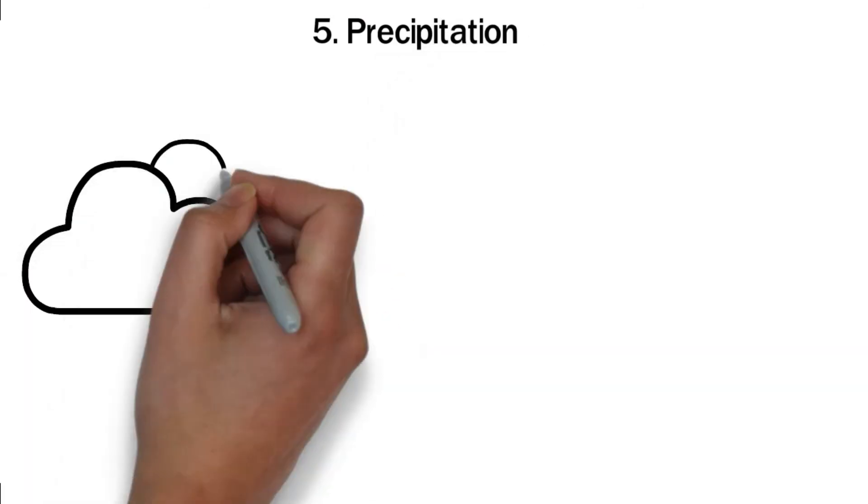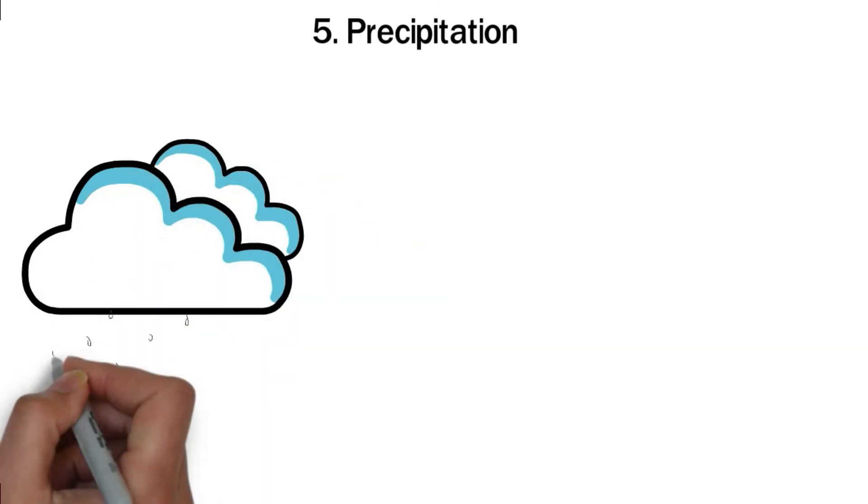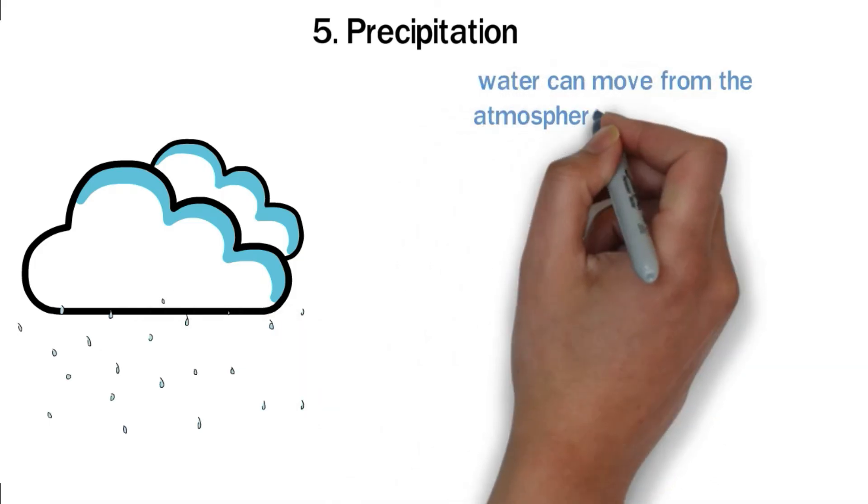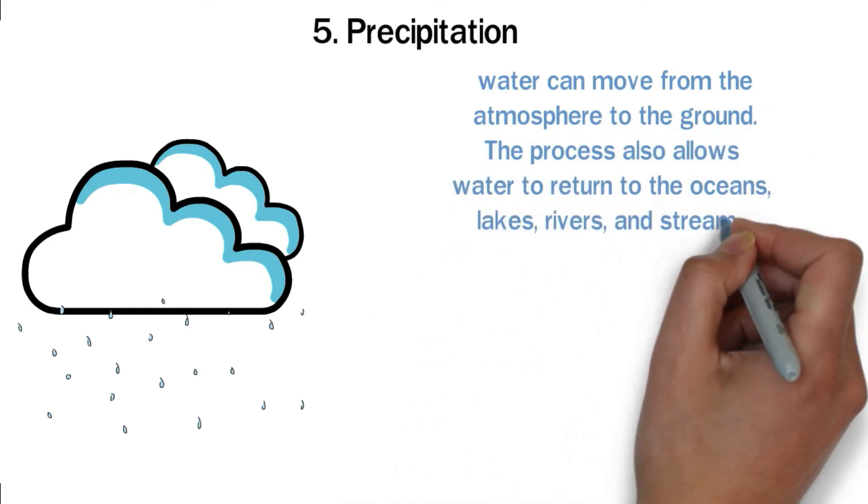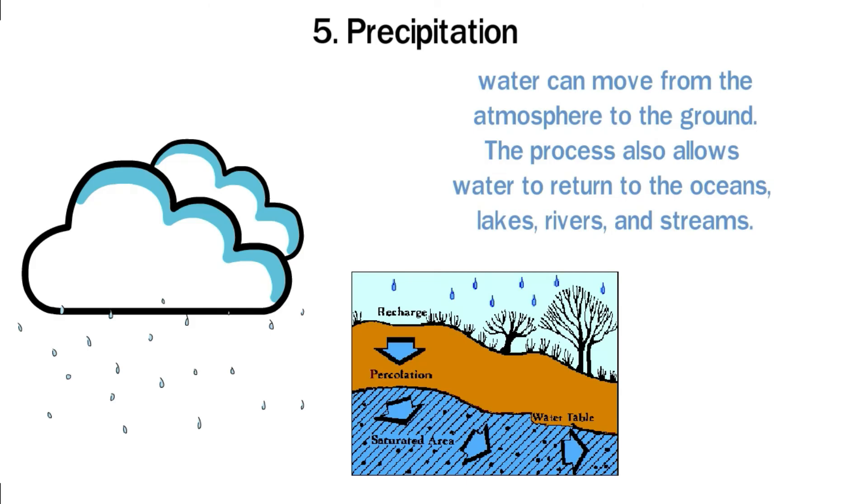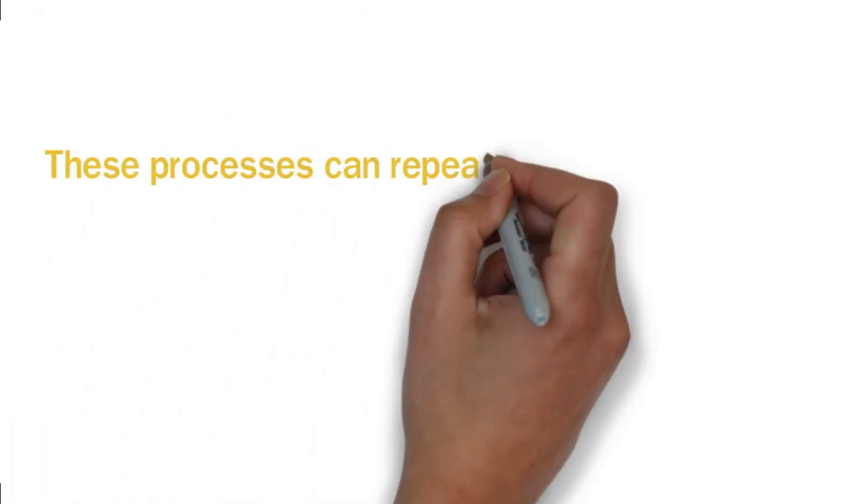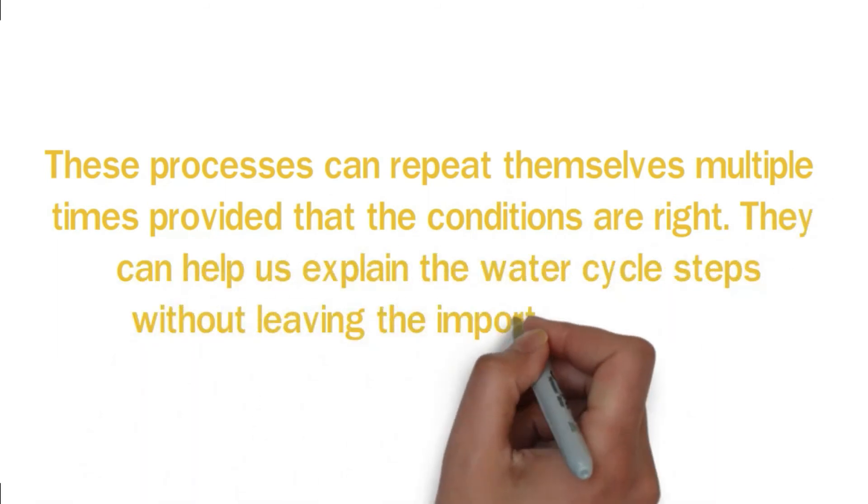5. Precipitation. Precipitation occurs when clouds can no longer hold the large volumes of water that form after condensation. It mainly occurs in the form of snow and rain. Through precipitation, water can move from the atmosphere to the ground. The process also allows water to return to the oceans, lakes, rivers, and streams. Water that has fallen onto the ground can travel through different layers of soil through a process called percolation. These processes can repeat themselves multiple times, provided that the conditions are right. They can help us explain the water cycle's steps without leaving the important facts out.